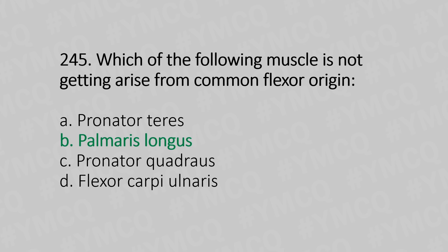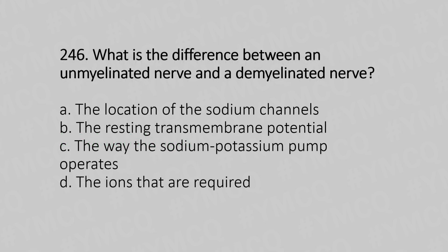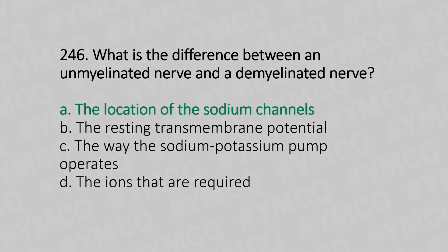Question 246: What is the difference between an unmyelinated nerve and a demyelinated nerve? Option A: the location of the sodium channels. Option B: the resting membrane potential. Option C: the way the sodium-potassium pump operates. Option D: the ions that are required. The answer is Option A, the location of the sodium channels.